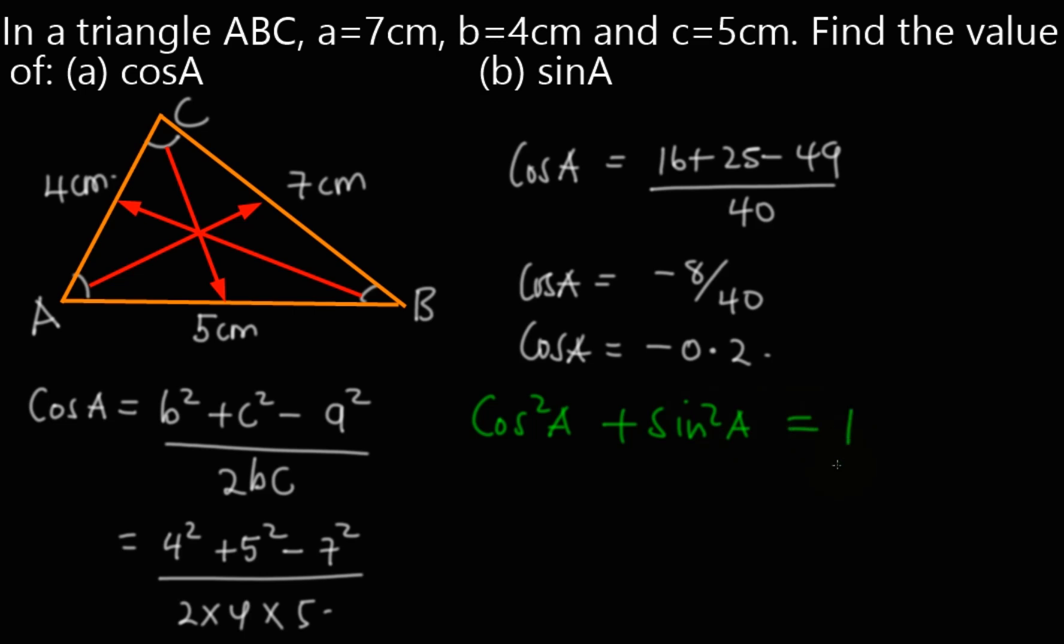everything equal to 1. But remember, we obtained cosine of angle A as -0.2. Therefore, we substitute it there, we square it, then plus sine squared of angle A, everything is equal to 1.